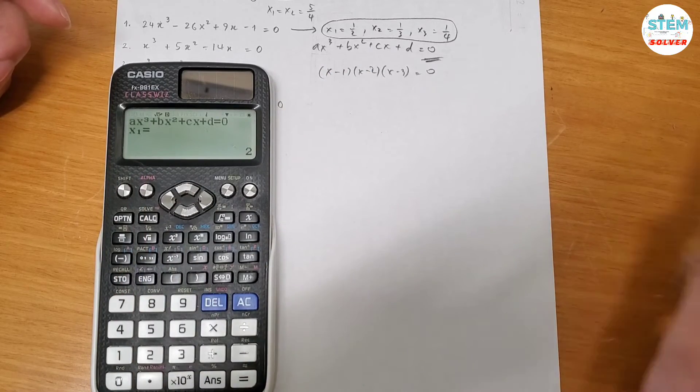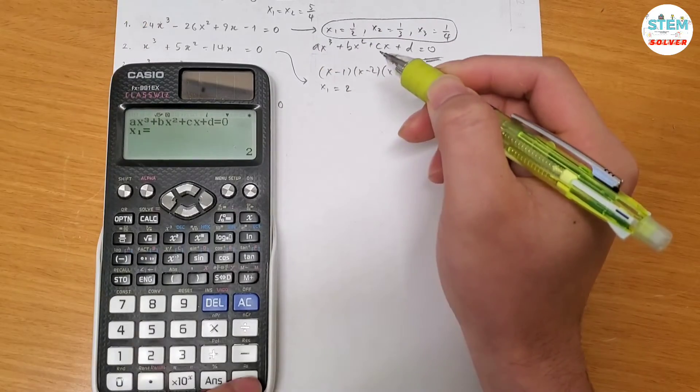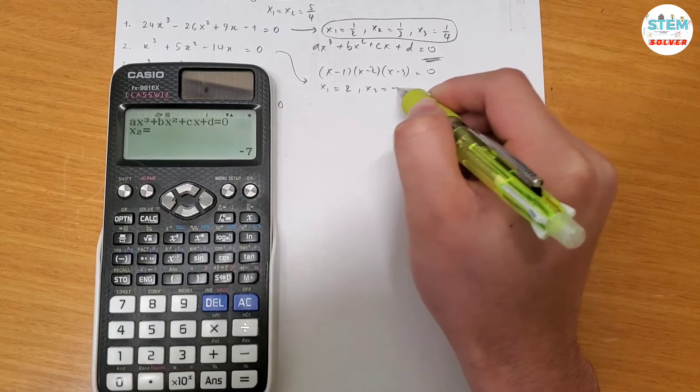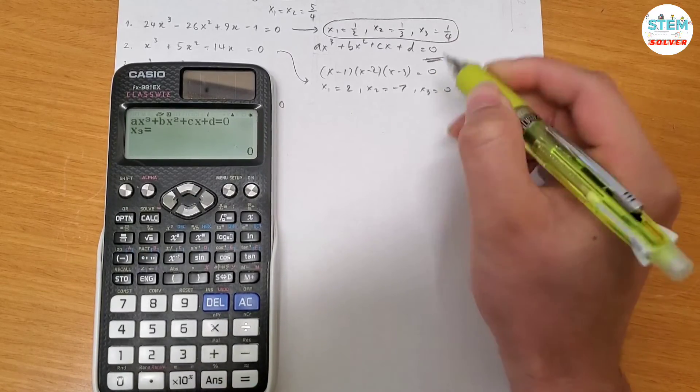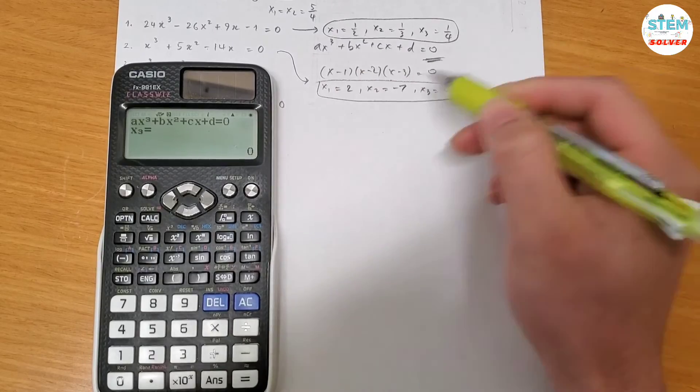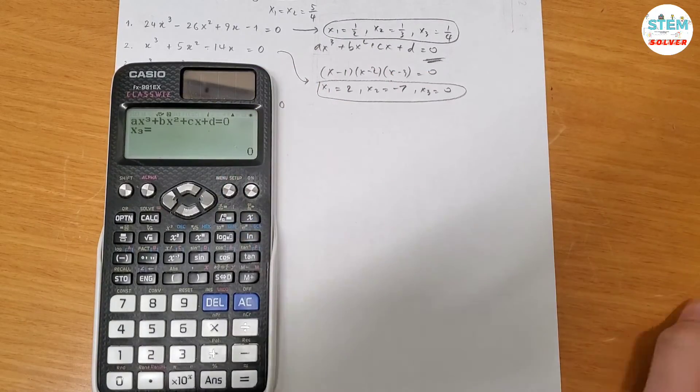Hit the equal sign gives me x1 equals 2, hit it again, x2 equals negative 7, hit it again, x3 equals 0. So here's all 3 distinct roots of that equation.